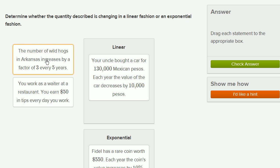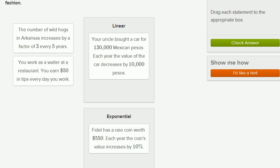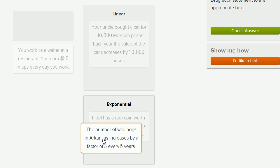The number of wild hogs in Arkansas increases by a factor of three every five years. They're not saying it increases by three hogs every five years. We're multiplying by three every five years. So this one right here is going to be exponential.